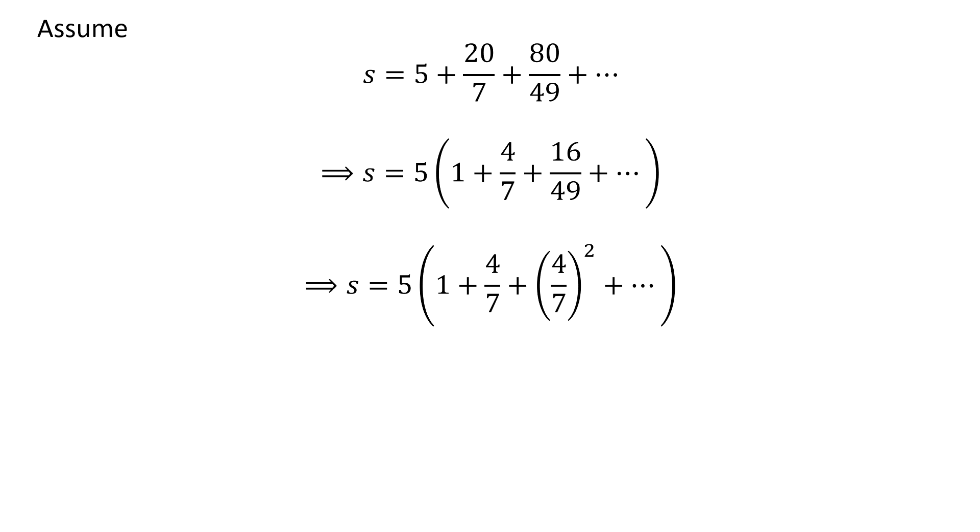We can write the above series as 5 times 1 plus 4 upon 7 plus square of 4 upon 7 plus so on.